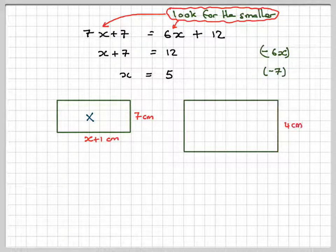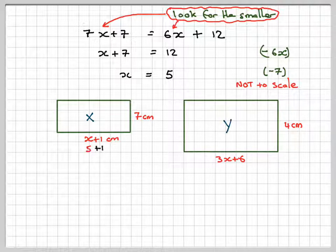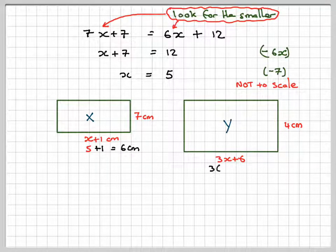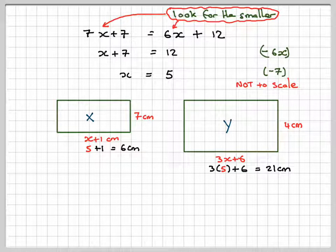Going back to the rectangles again. We wouldn't normally draw them out again. So this is going to be 5 + 1 which is 6cm. And this one is going to be 3 times 5 plus 6 which is 21cm.